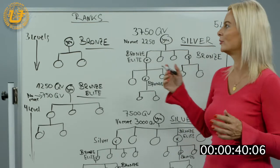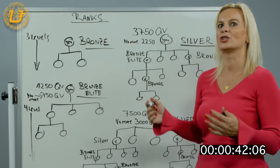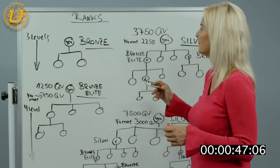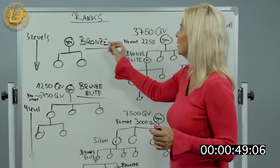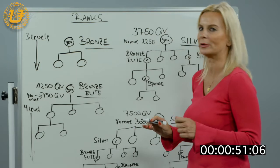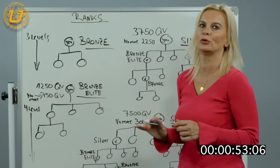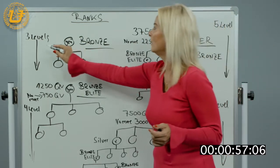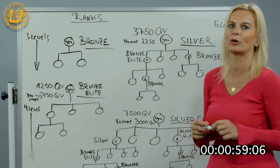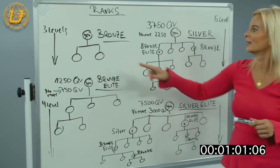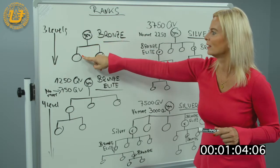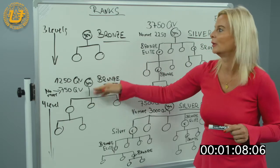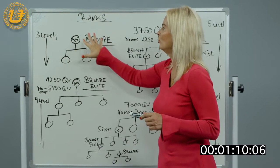The next rank after Affiliate is Bronze. As I have drawn here, Bronze means you have signed in two people — you have two people and you are now Bronze. You unlock three levels down in your compensation plan. So once you have people three levels down and you are Bronze, you get paid on those three levels.